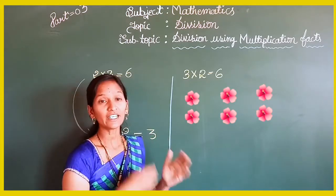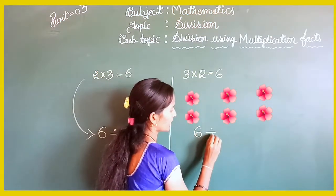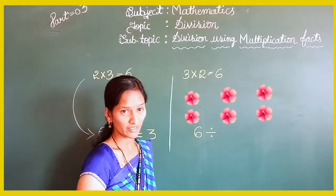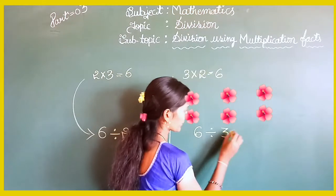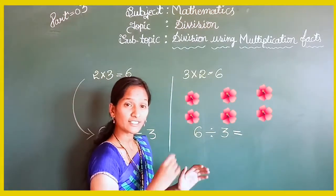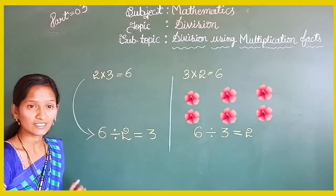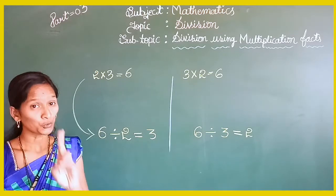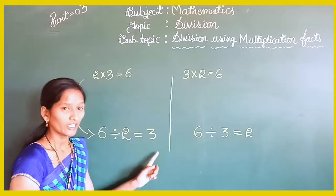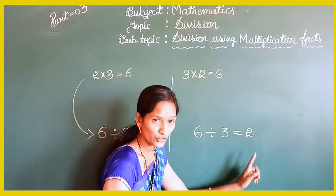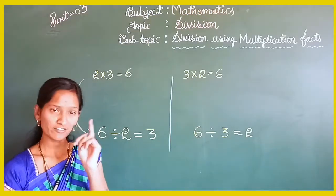Now how can you write this as a division fact? First write down the total number of flowers — that is 6. Next write the division symbol. After that write the number of groups — that is 3. Then write the number of flowers in each group — that is 2. So what do you observe in both cases? The multiplication fact has two division facts: 6 divided by 2 equals 3, and 6 divided by 3 equals 2.